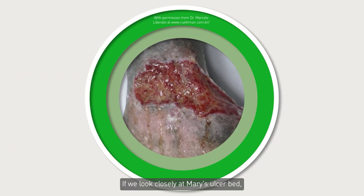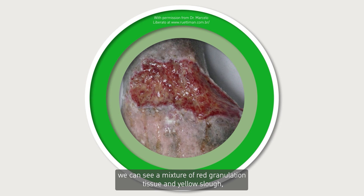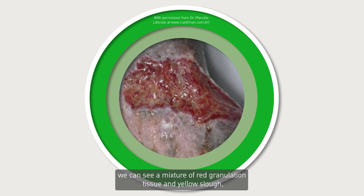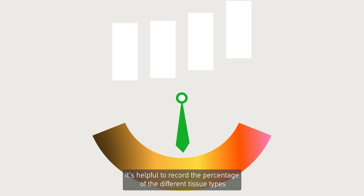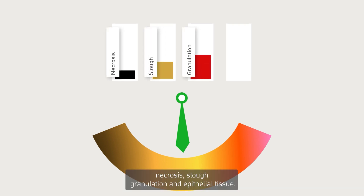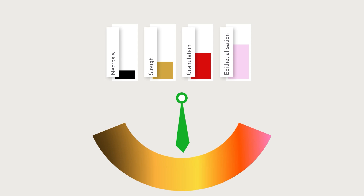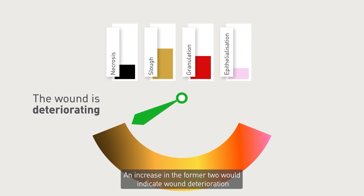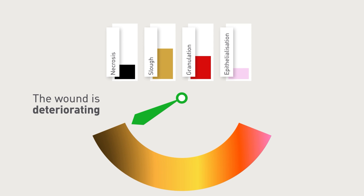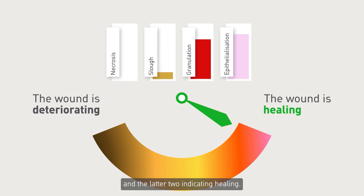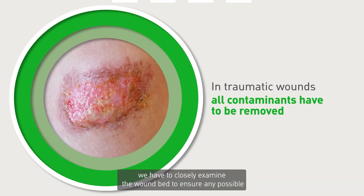If we look closely at Mary's ulcer bed, we can see a mixture of red granulation tissue and yellow slough. It's helpful to record the percentage of the different tissue types: necrosis, slough, granulation and epithelial tissue. An increase in the former two would indicate wound deterioration, and the latter two indicate healing. In a traumatic wound, we have to closely examine the wound bed to ensure any possible contaminants are identified and removed.